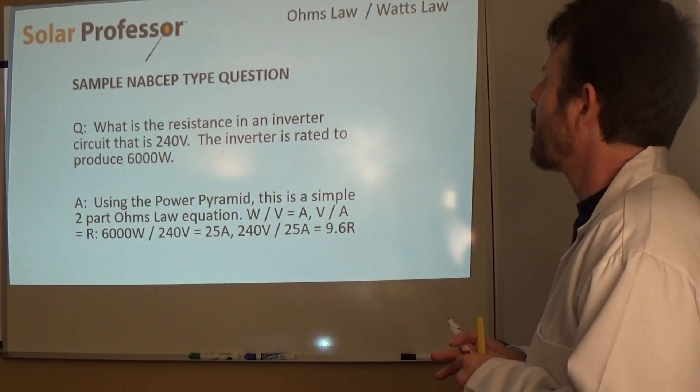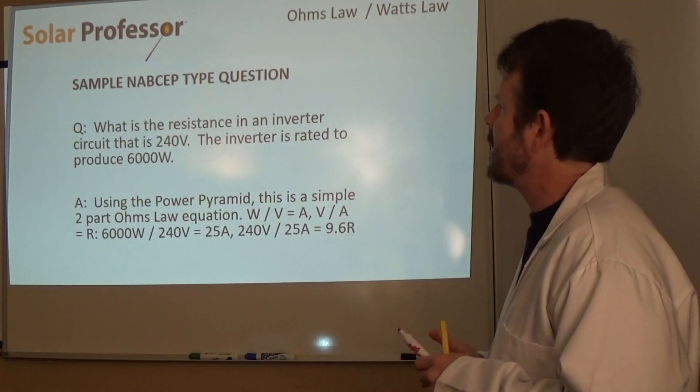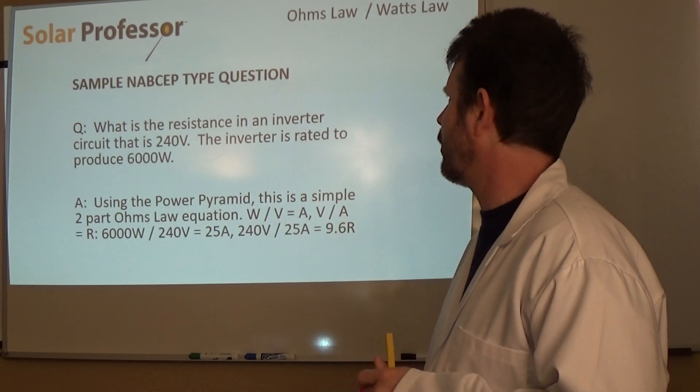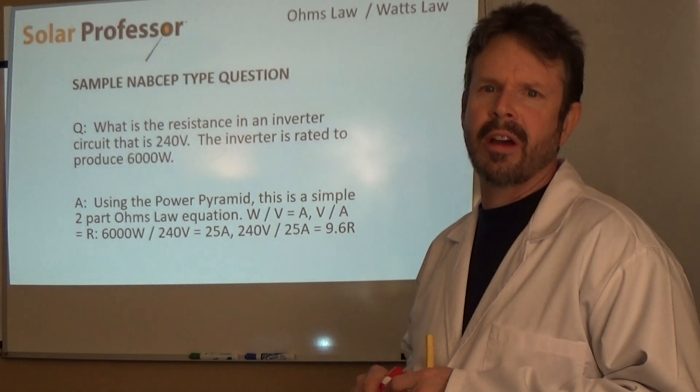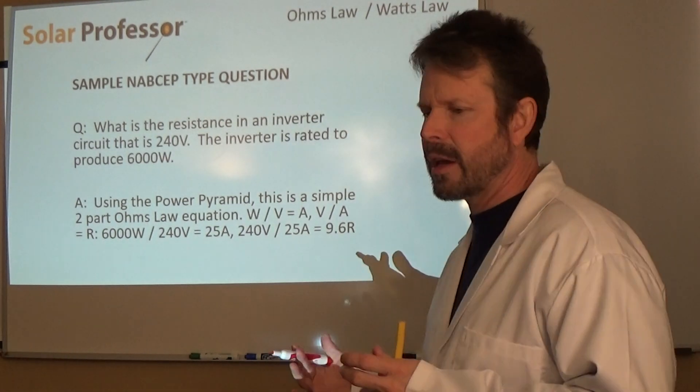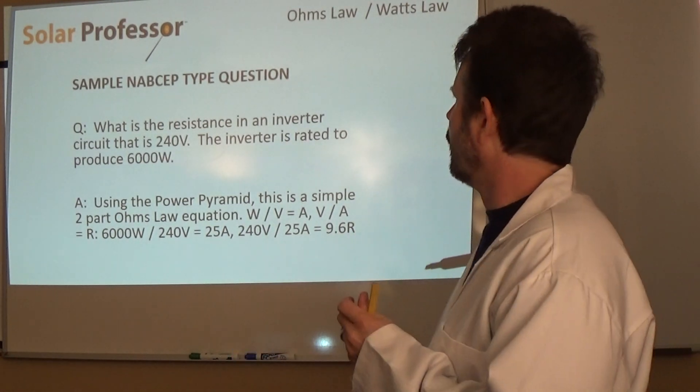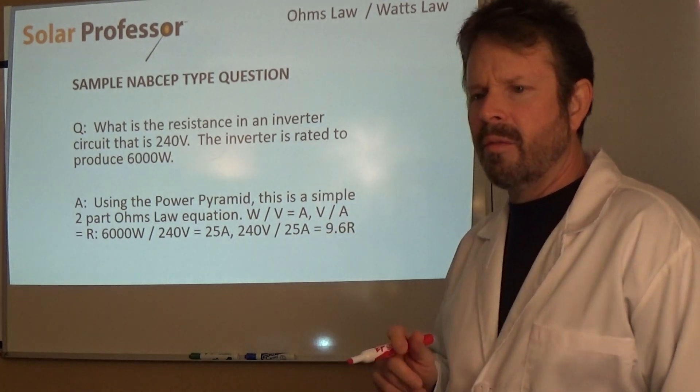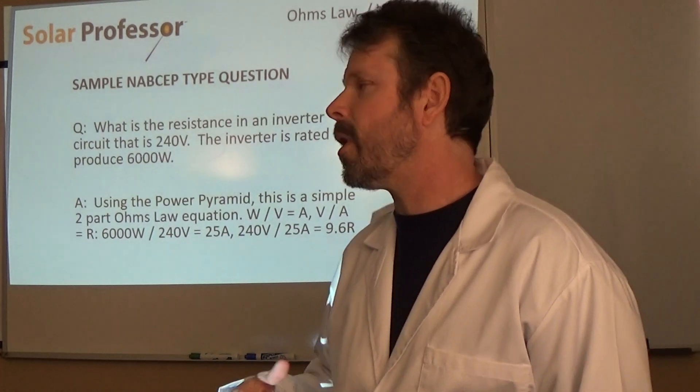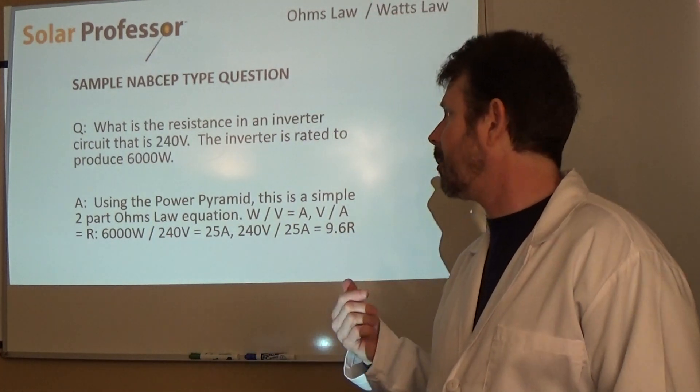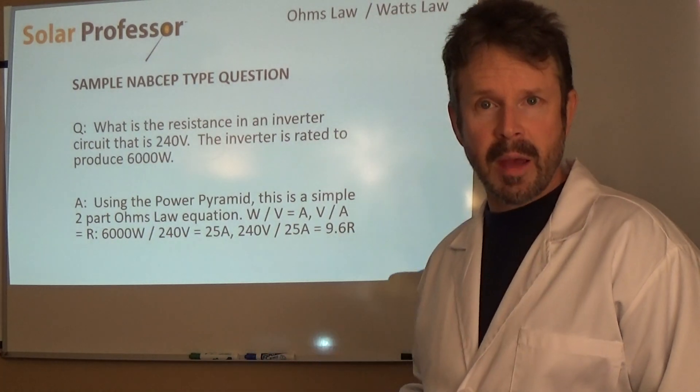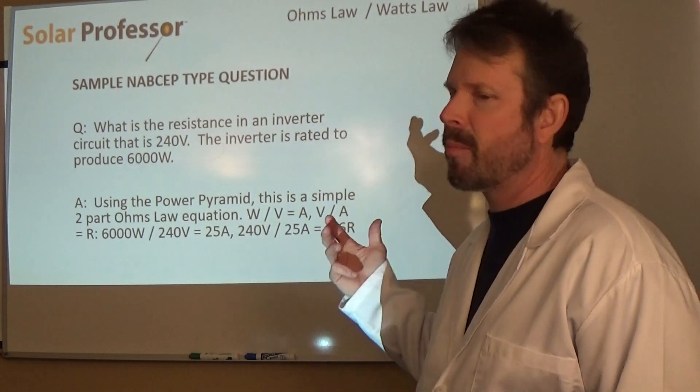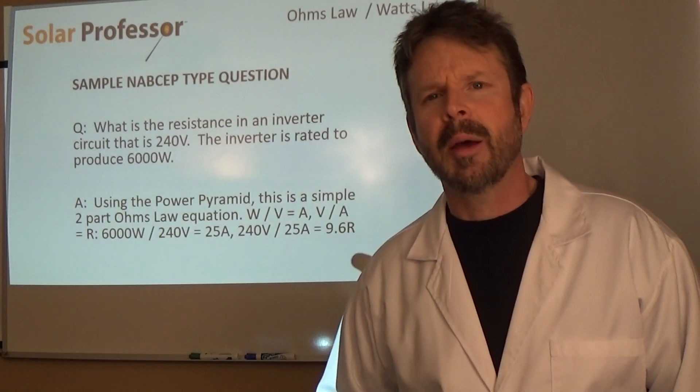Next one. This one says, what is the resistance in an inverter circuit that is 240 volts? Inverter is rated to produce 6000 watts. Does this have everything that we need to solve the equation? I don't know. Let's see. When you have an inverter, in order to produce watts, you're going to need volts, you're going to need amps. Volts times amps equals watts. So I notice here that we are missing amps, but can we find amps is the question. Yes, we can find amps very easily using the Watt's Law portion of the power pyramid.